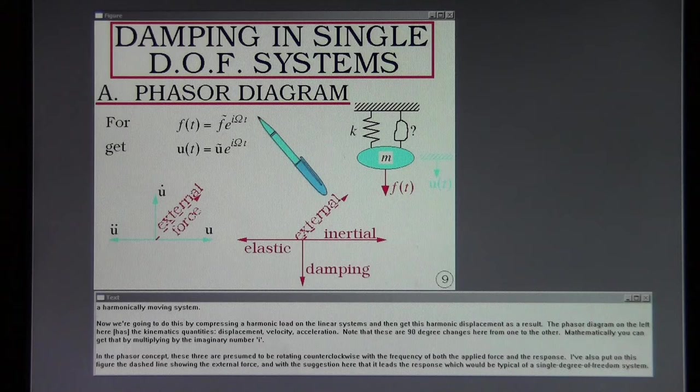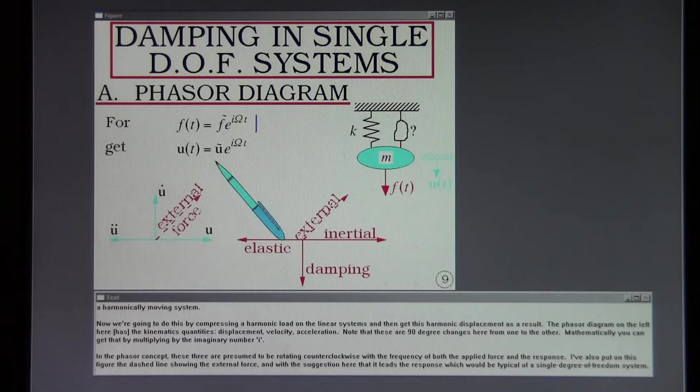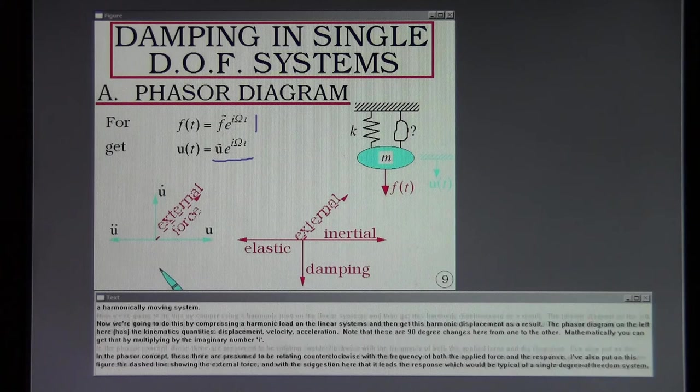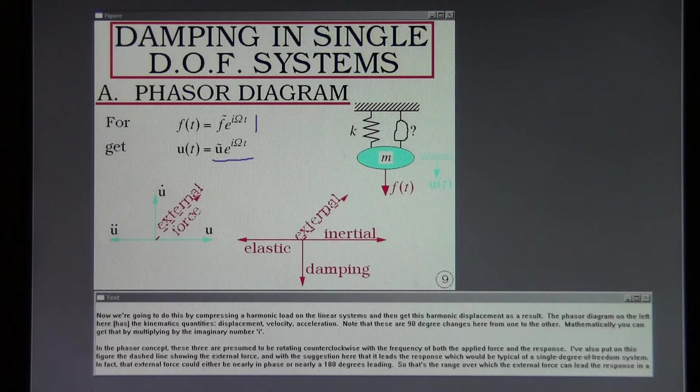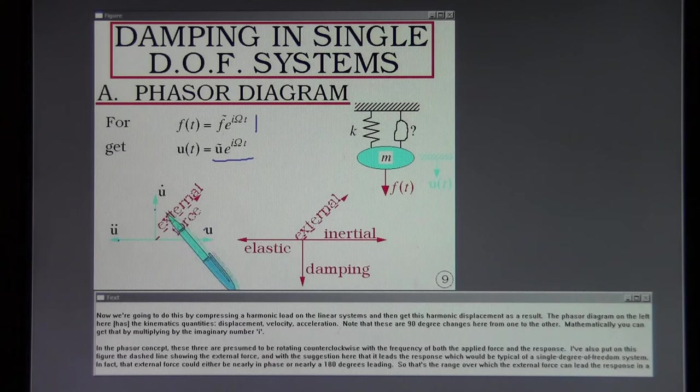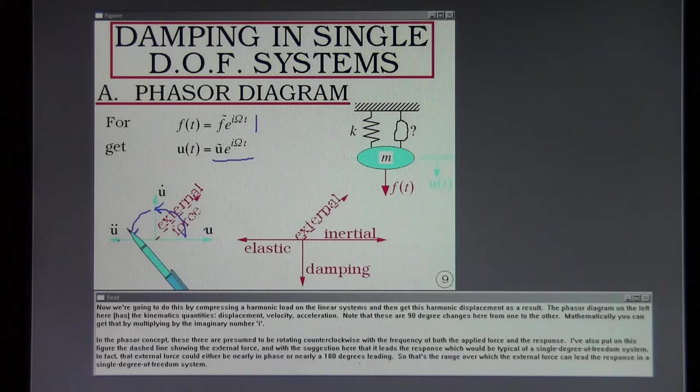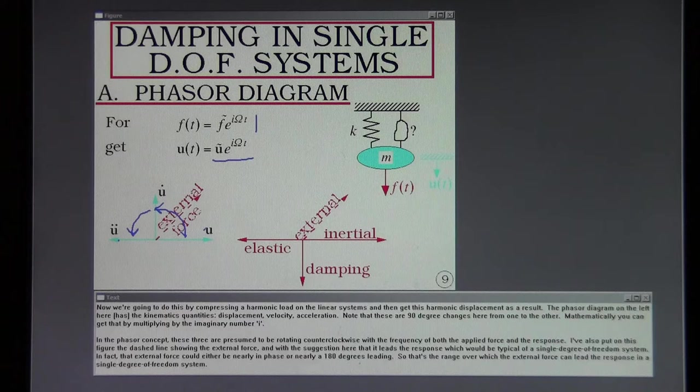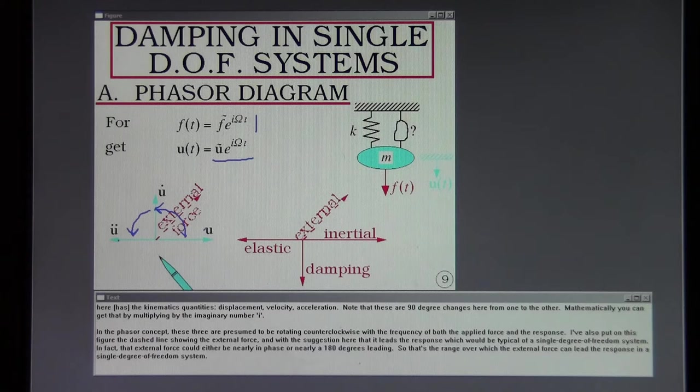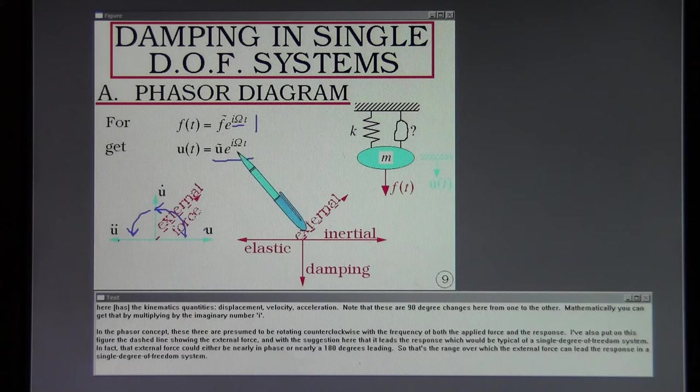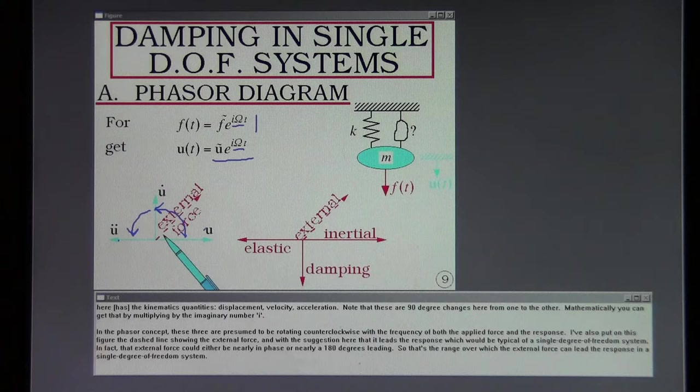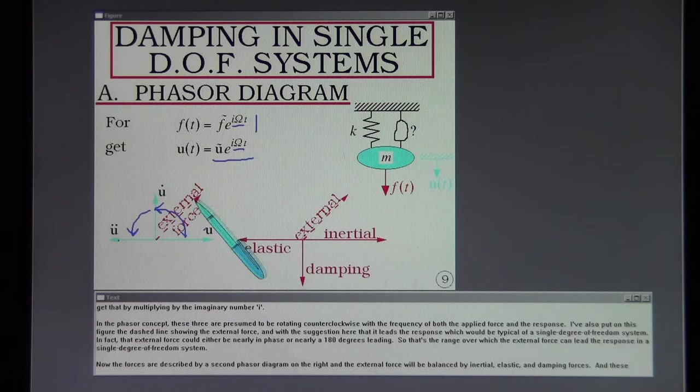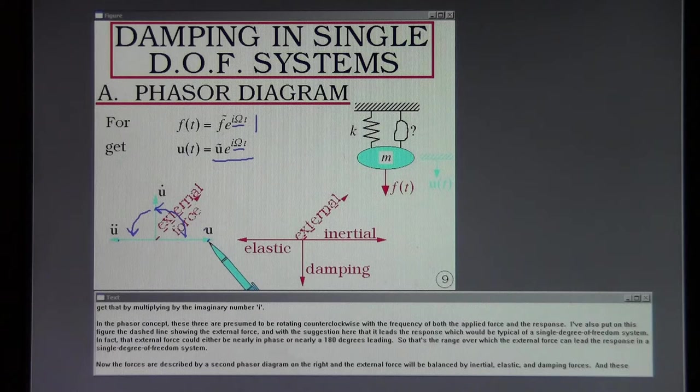Now we're going to do this by impressing a harmonic load on the linear systems and then get this harmonic displacement as a result. The phasor diagram on the left here is the kinematic quantities, displacement, velocity, acceleration. Note that these are 90 degree changes here from one to the other. Mathematically you can get that by multiplying by the imaginary number i. In the phasor concept these three are presumed to be rotating counterclockwise with the frequency of both the applied force and the response. I've also put on this figure the dashed line showing the external force and with the suggestion here that it leads the response, which would be typical of a single degree of freedom system.